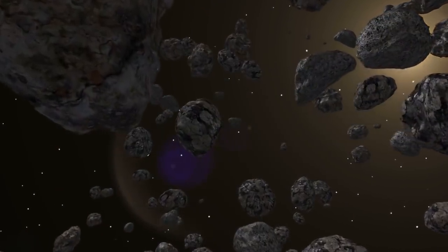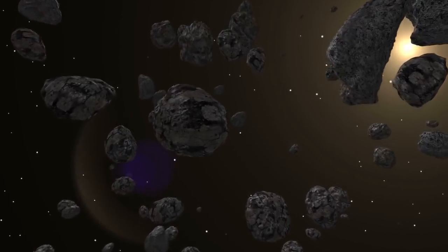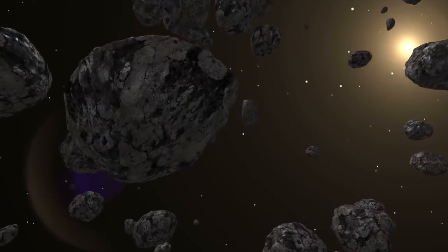Ian J. O'Neill of the Jet Propulsion Laboratory said the following: In short, 2002 NN-4 is a very well-known asteroid with a known orbit that will pass by Earth at a very safe distance.